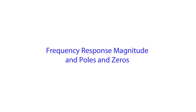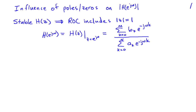It's very useful to understand how the poles and zeros of a system described by a linear constant coefficient difference equation impact the frequency response magnitude. Basically, we want to study how the poles and zeros influence the magnitude of H(e^{jω}).